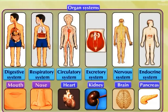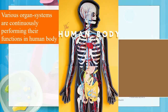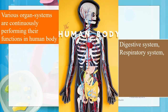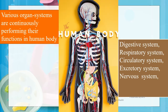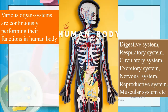Previously we have learned that in our body we have various organ systems like the digestive system, respiratory system, circulatory system, excretory system, nervous system, endocrine system, and in these systems we have various organs which are responsible to work together and perform various functions. There are various organ systems continuously performing their functions in our body, including the reproductive system and muscular system.